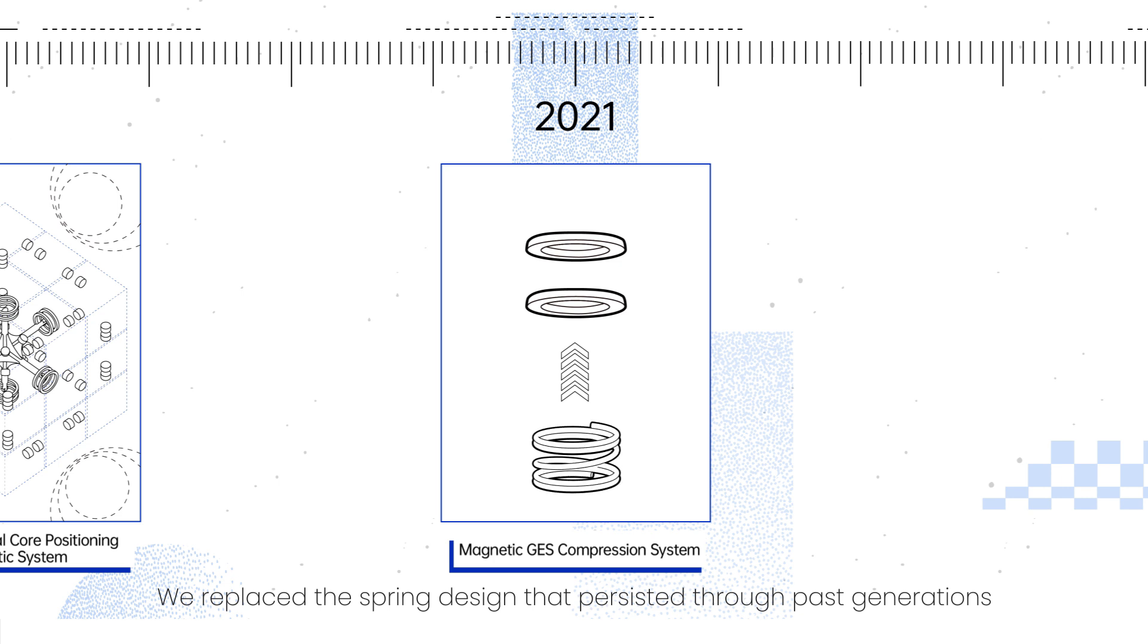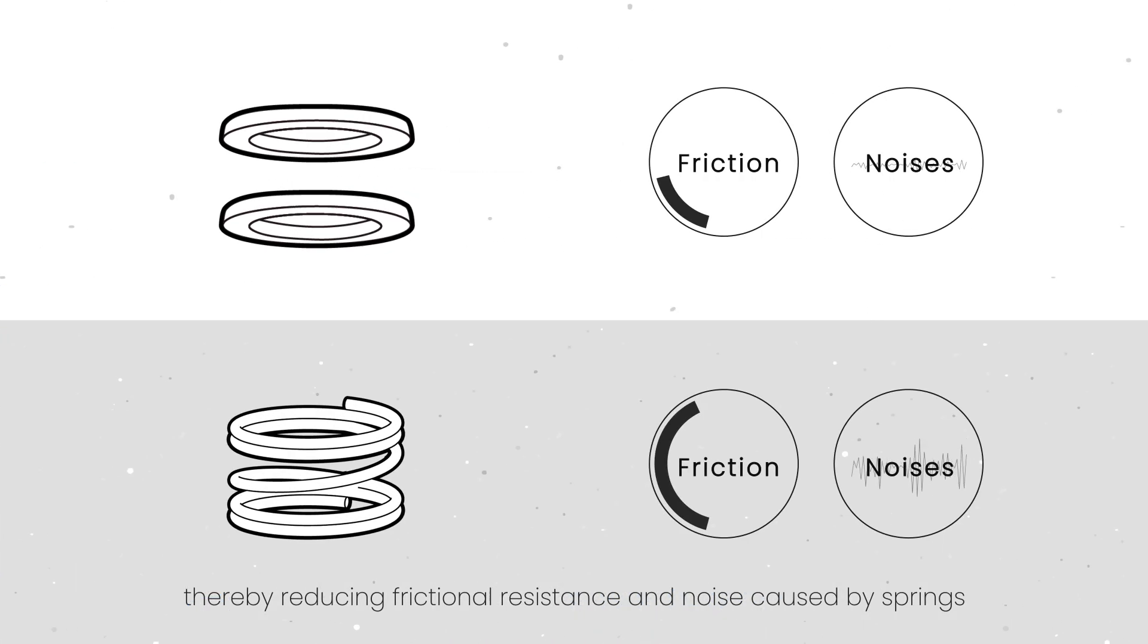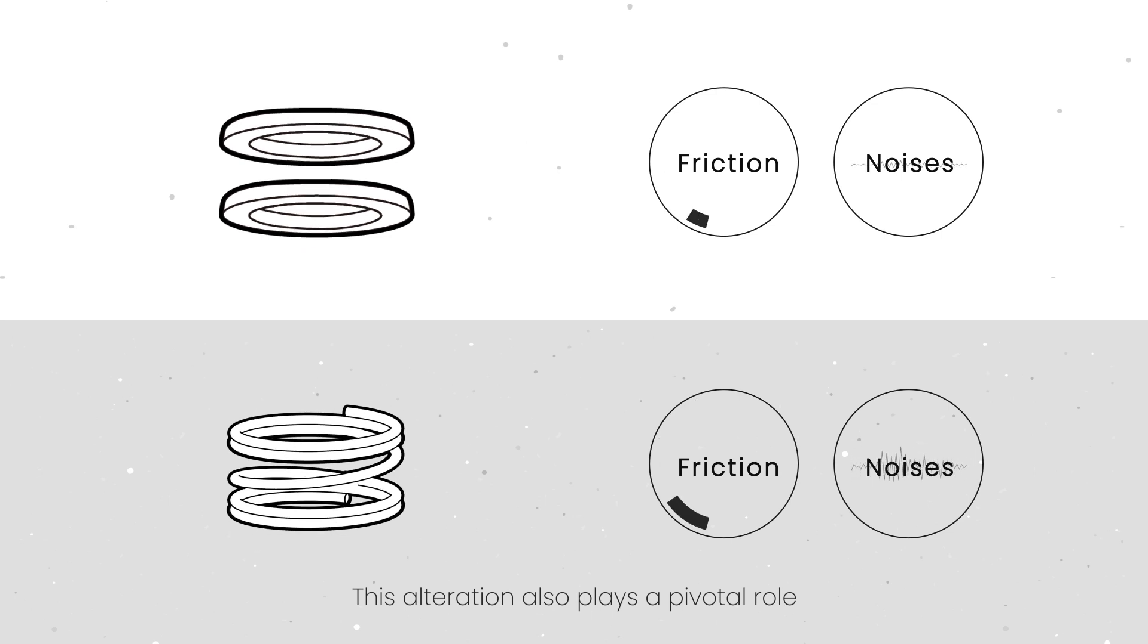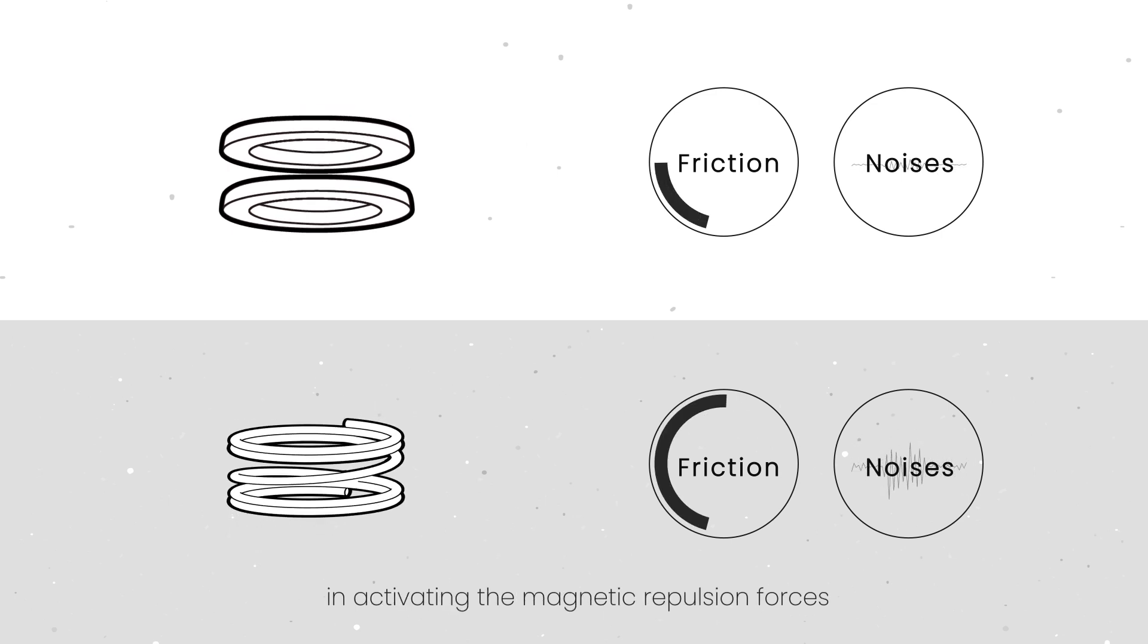We replaced the spring design that persisted through past generations in the tension system with two circular magnets. The magnetic repulsion they generate serves as a substitute for the physical deformation-based spring tension, thereby reducing the frictional resistance and noise caused by springs. This alteration also plays a pivotal role in activating the magnetic repulsion forces.